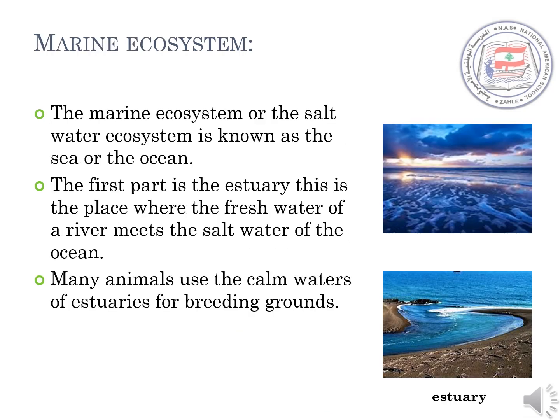The second part of the aquatic ecosystem is called the marine ecosystem. The marine ecosystem, or saltwater ecosystem, is known as the sea or the ocean. The first part is called the estuary. This is the place where the fresh water of a river meets the salt water of the ocean. Many animals use the calm waters of estuaries for breeding grounds. As you can see in the figure, the estuary is the meeting point between the river and the ocean.